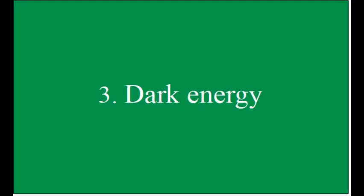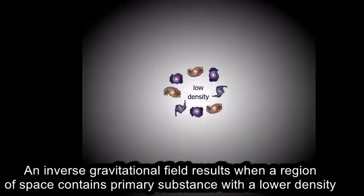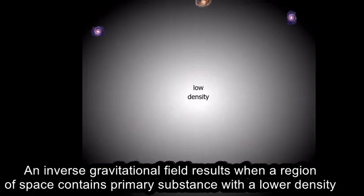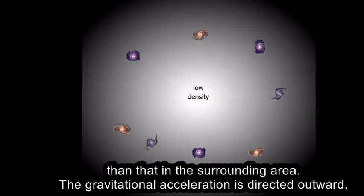3. Dark Energy. An inverse gravitational field results when a region of space contains primary substance with a lower density than that in the surrounding area.